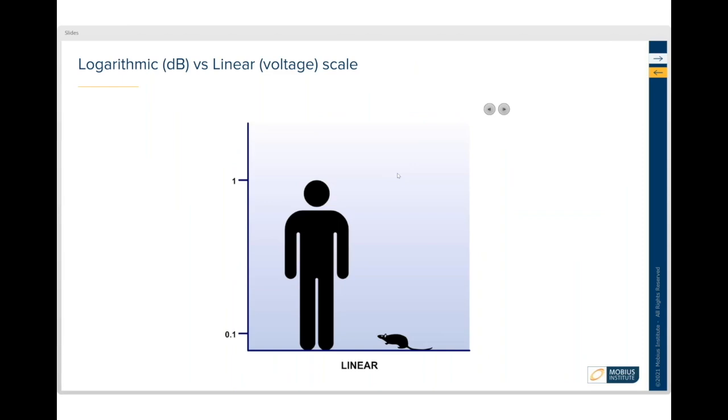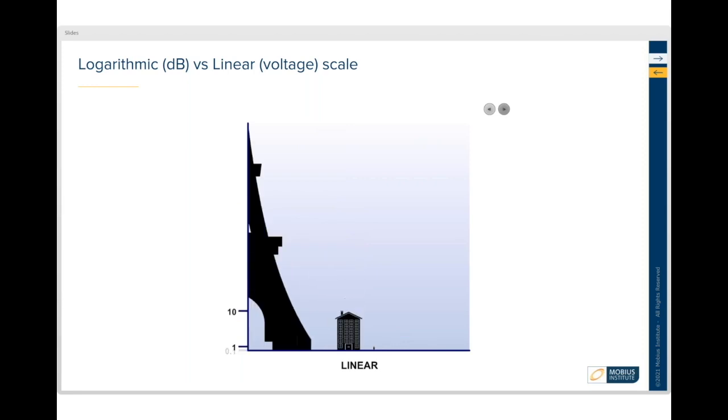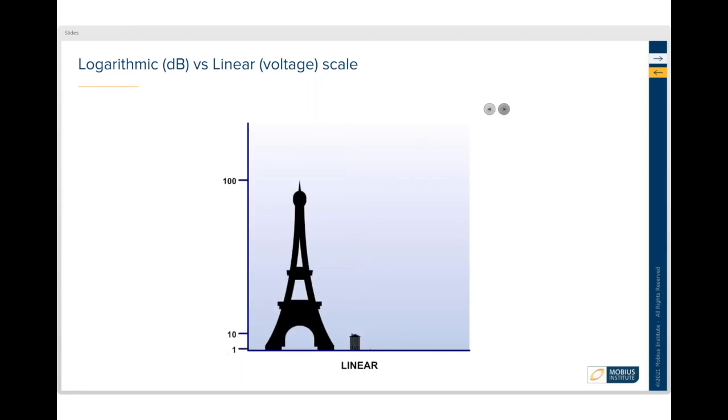Now I've got a strange way of explaining the dB scale. Imagine if you will, you're standing there, so there you are, and you've got this rat next to you. And the rat is one tenth of your height. It's either a big rat or a short person, but the rat is one tenth. You can see there on the scale, 0.1 the height.